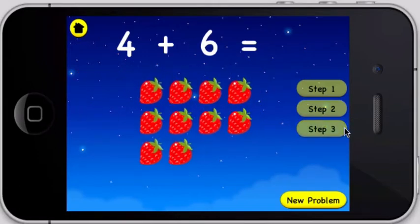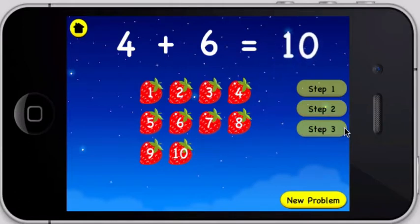How many strawberries do you have in all? 1, 2, 3, 4, 5, 6, 7, 8, 9, 10. 4 plus 6 equals 10.